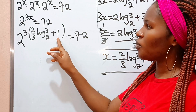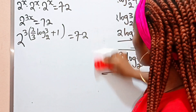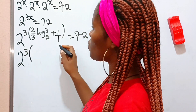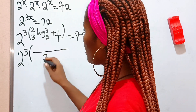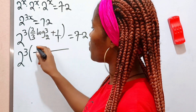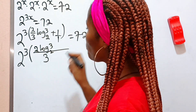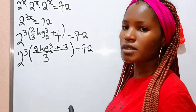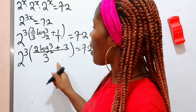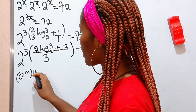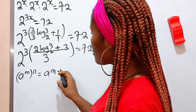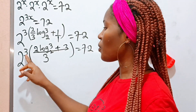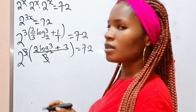We solve the bracket first. The LCM of 3 and 1 is 3. When 3 divides 3, we get 1, giving us 2 log 3 base 2. Then 1 divided by 1 times 3 gives 3. So the bracket becomes 2 log 3 base 2 plus 3, all over 3. Now recall that a to the power of m raised to the power of n equals a to the power of m times n. So the 3 in the exponent multiplies through and cancels with the denominator 3, leaving us with 2 to the power of 2 log 3 base 2 plus 3.